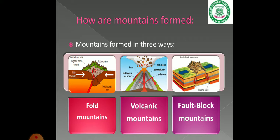Next are volcanic mountains, which are formed from inside the earth. When magma from within the earth cannot be folded outward, it erupts through the surface, and we call the resulting landform a volcanic mountain.